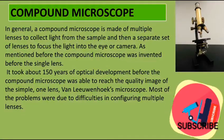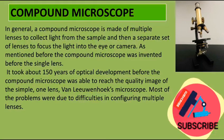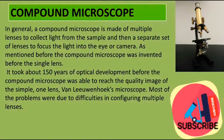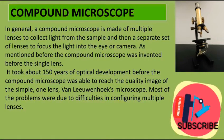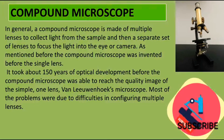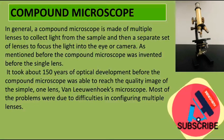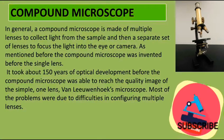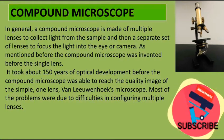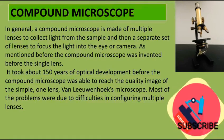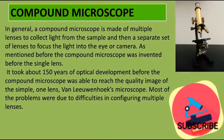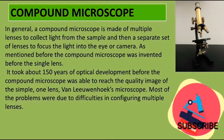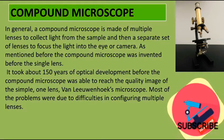In general, a compound microscope is made of multiple lenses to collect light from the sample and then a separate set of lenses to focus the light into the eye or camera. As mentioned, the compound microscope was invented before the single lens microscope. It took about 150 years of optical development before the compound microscope could reach the image quality of Van Leeuwenhoek's single-lens microscope, mostly due to difficulties in configuring multiple lenses.